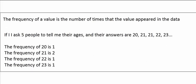So what is a frequency? The frequency of a value is just the number of times that that value appeared in a data set. So if a value appears five times, it has a frequency of five. If it appears 10 times, it has a frequency of 10.